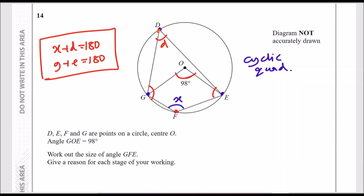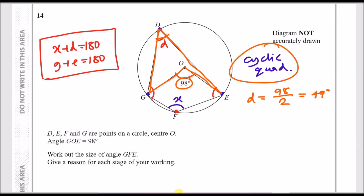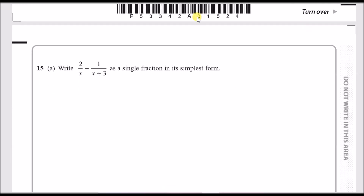There's also a second property: the angle at the center of the circle is twice the angle at the circumference. So angle D is half of 98, which is 49 degrees. Now using the cyclic quadrilateral property: x plus 49 equals 180. Subtracting 49, x equals 131 degrees, and you're done.